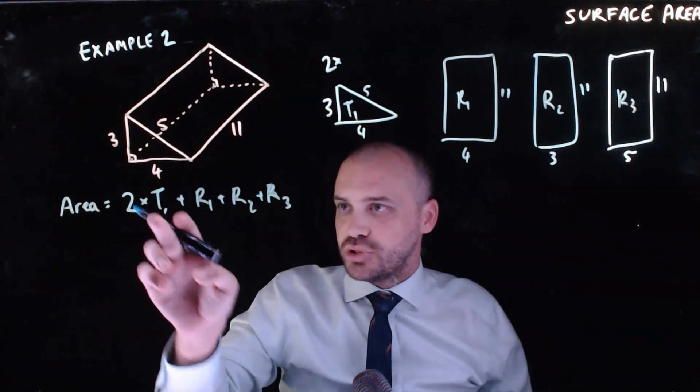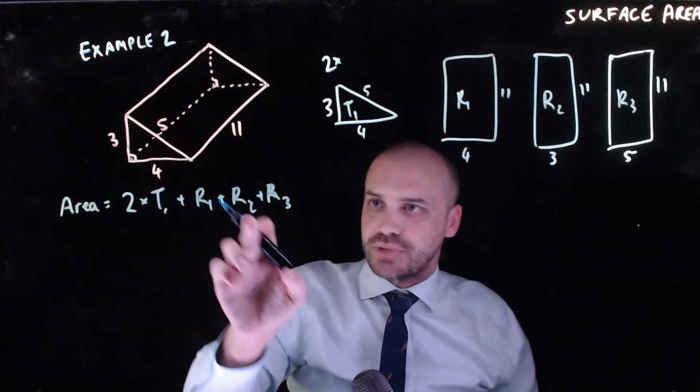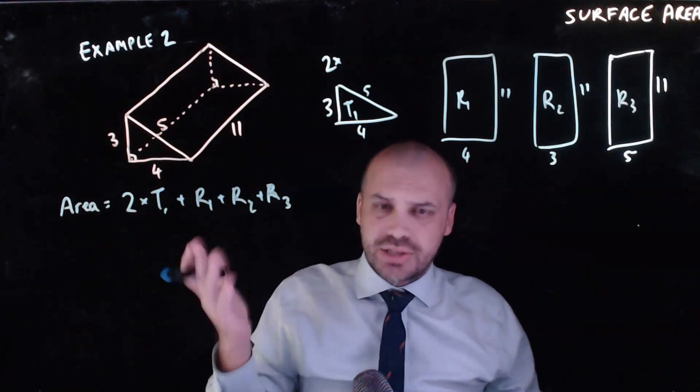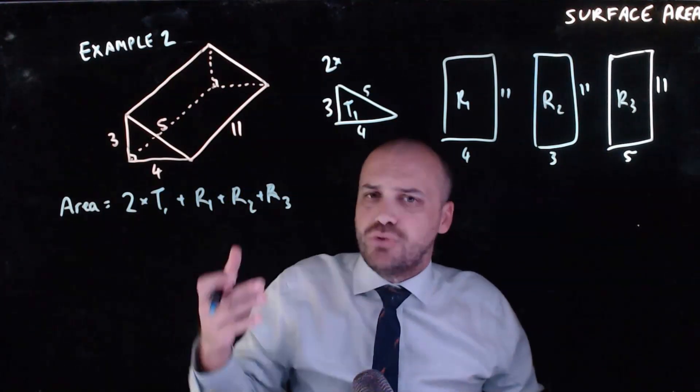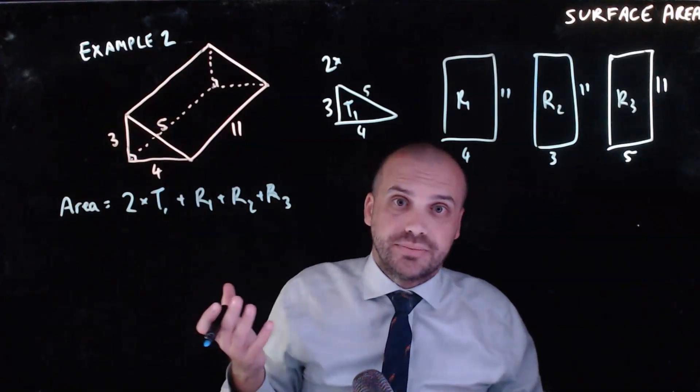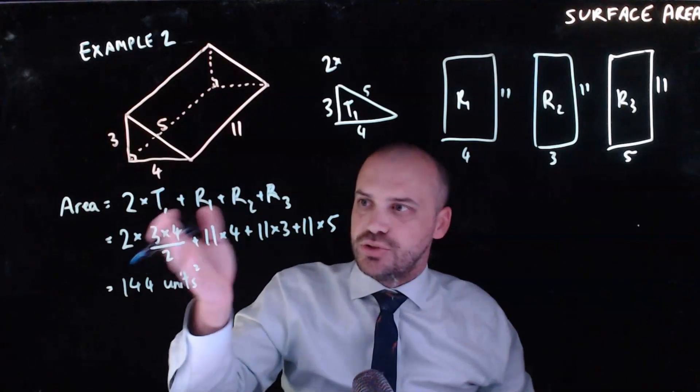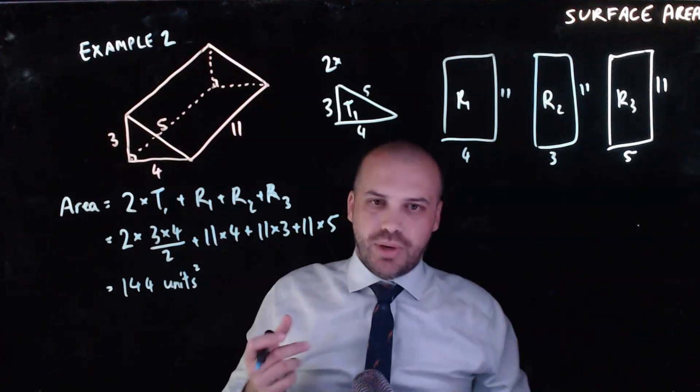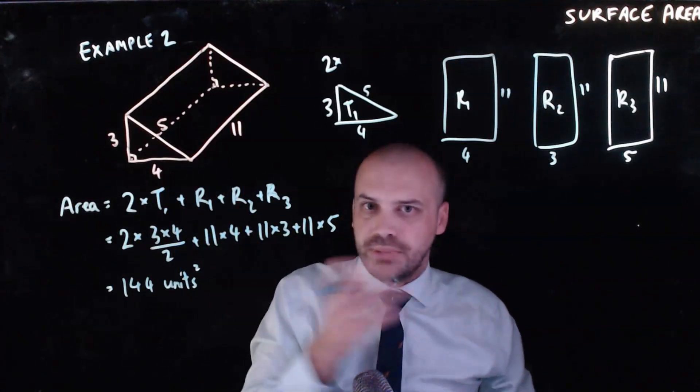I've got my formula here: 2 times triangle 1 plus rectangle 1 plus rectangle 2 plus rectangle 3. You're not going to find that formula in any textbook anywhere. You're inventing that formula as you go based on the shape and based on what you're finding there. So put some numbers in there. Don't forget to use your triangle formula, it's not a rectangle. And then you'll get 144 units squared whatever they are: centimeters, meters, millimeters.